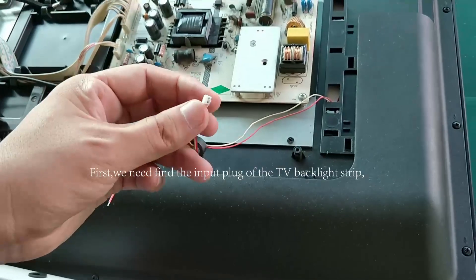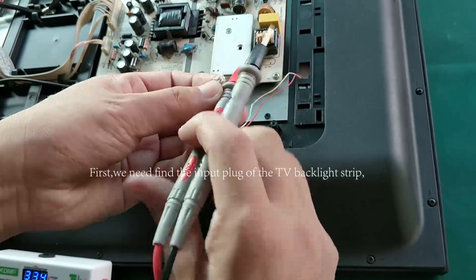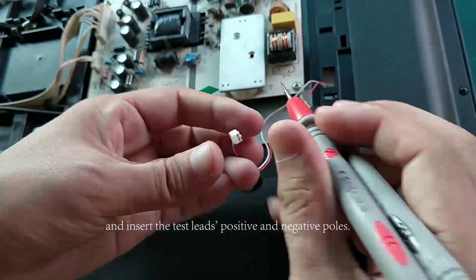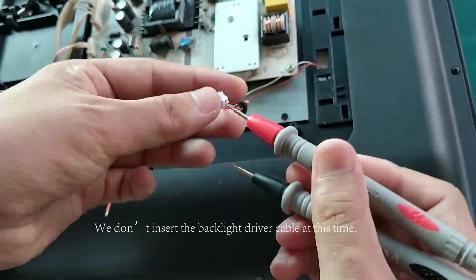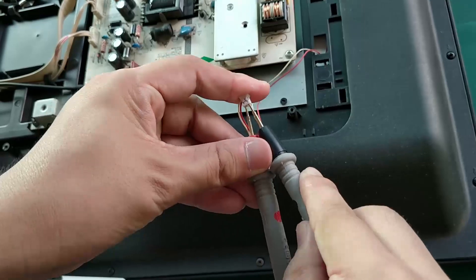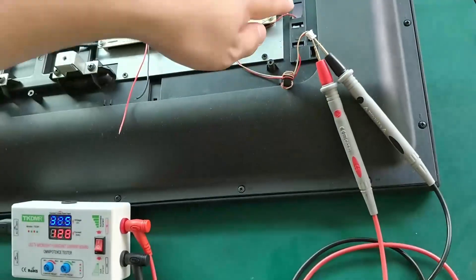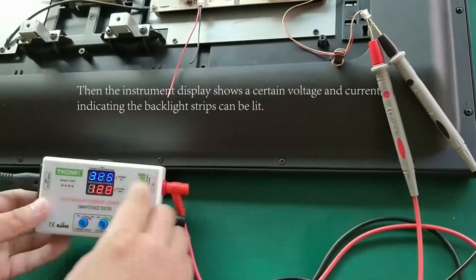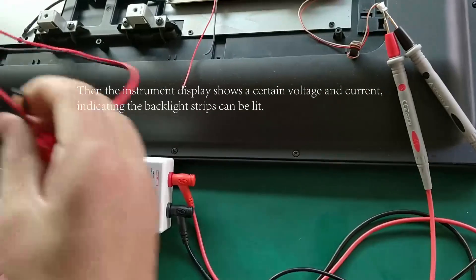First, we need find the input plug of the TV backlight strip, pull it out and insert the test leads positive and negative holes. We don't insert the backlight driver cables at this time. Then the instrument display shows a certain voltage and current indicating the backlight strips can be lit.